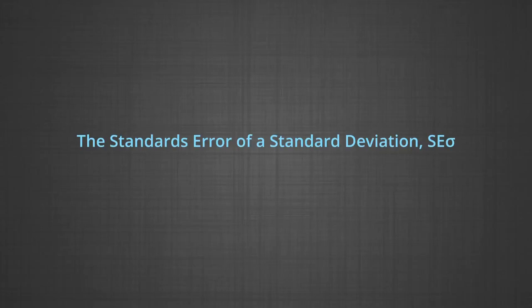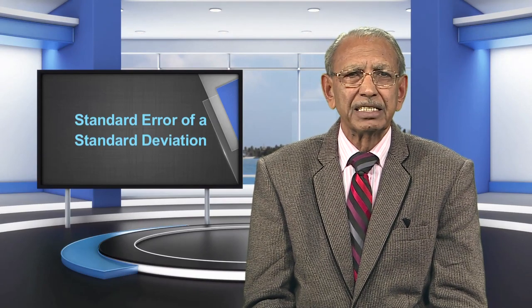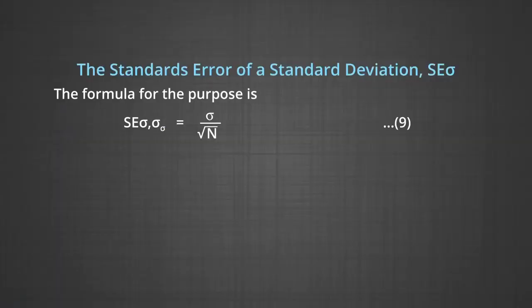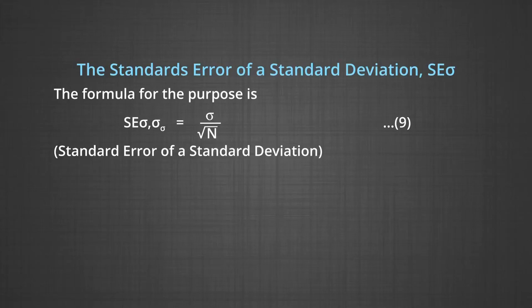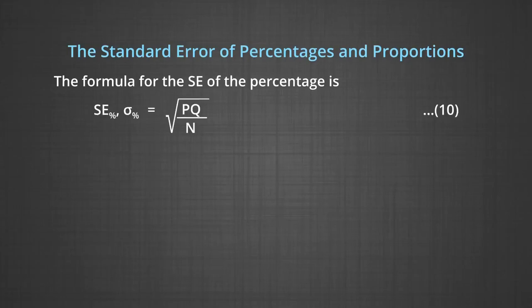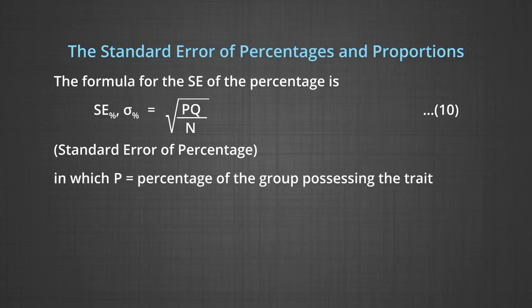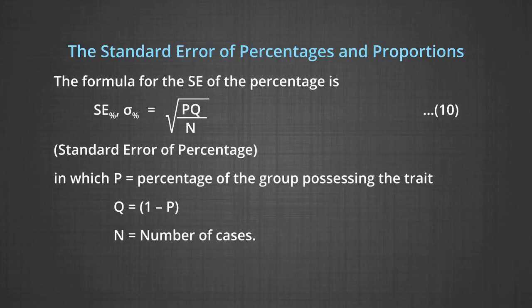Now we come to another important concept: the standard error of a standard deviation (SE of SD). Since standard deviation also records fluctuations from sample to sample, the SE of the standard deviation can be estimated and used to find the limits within which the population SD will fall. The formula is: SE of SD equals sigma divided by the square root of n. The formula for standard error of percentage is: sigma-percentage equals the square root of (P times Q divided by n), in which P stands for the percentage of the group possessing the trait, Q is 1 minus P, and n is the number of cases.